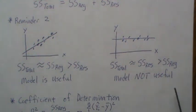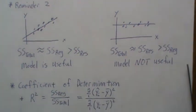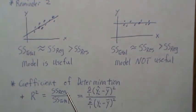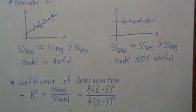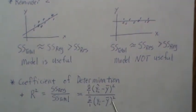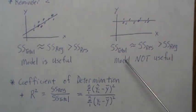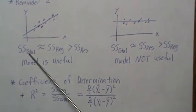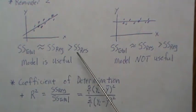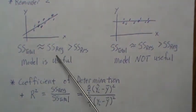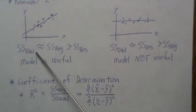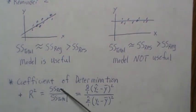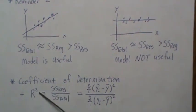R² is defined as the regression sum of squares divided by the total sum of squares. In scalar form, the total variation is partitioned into these two components, and when the regression sum of squares is close to the total, R² is close to one.